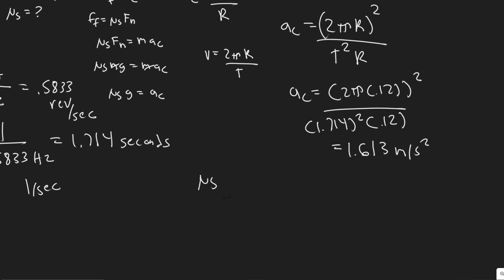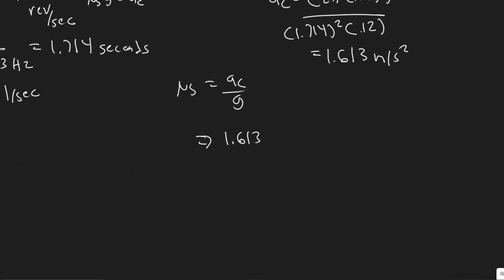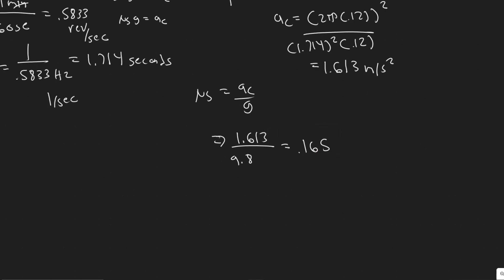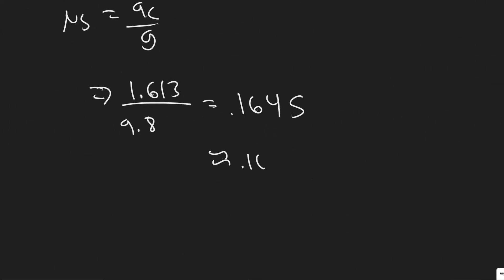Now, since μs times g equals A_c, we divide A_c by g: 1.613 divided by 9.8 equals approximately 0.164 to 0.165. Depending on rounding, you can say about 0.16. Keep in mind that rounding was done throughout, so either value works — round however your teacher requires.